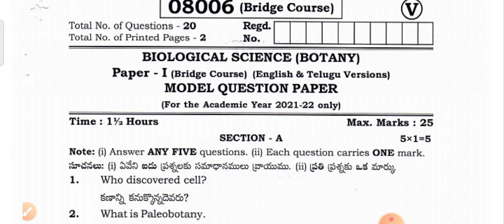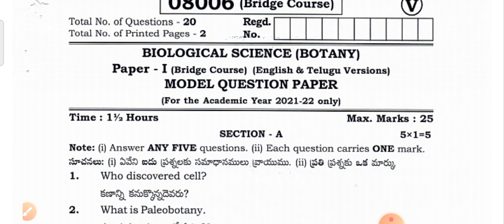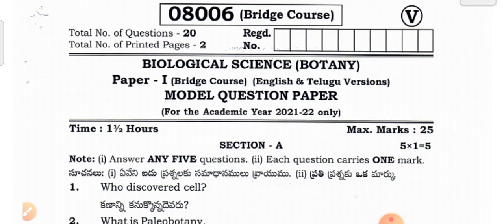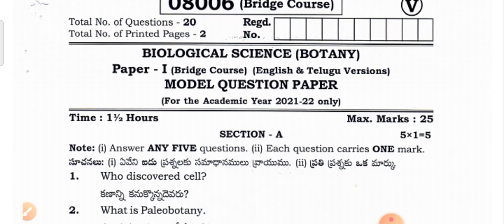Today we are going to discuss the model question paper questions and answers for bridge course exam students. This is the first time for some students, so don't skip. In the bridge course, biological sciences has two papers: botany and geology. Biological sciences one is for first year students, and biological sciences two is for second year students. This is for BiPC certificate course exam students.